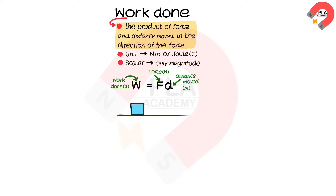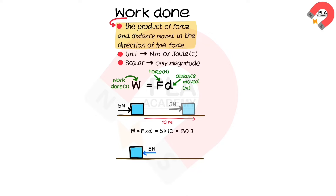For example, a force of 5 Newtons acts on a box, causing it to move in the direction of force for a distance of 10 meters. Therefore, work done is 5 × 10 = 50 Joules. On the other hand, if a force of 5 Newtons acts in the opposite direction of the distance moved, which is the negative direction, therefore work done is −5 × 10 = −50 Joules.